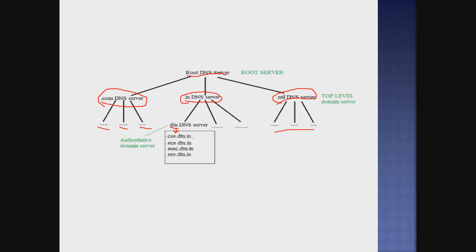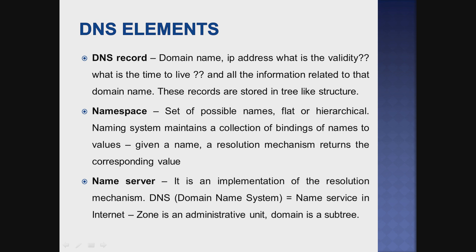Every web page has an IP address. Instead of memorizing IP addresses, we use domain names. Now let's look at the DNS elements. DNS contains three components: DNS record, namespace, and nameserver.